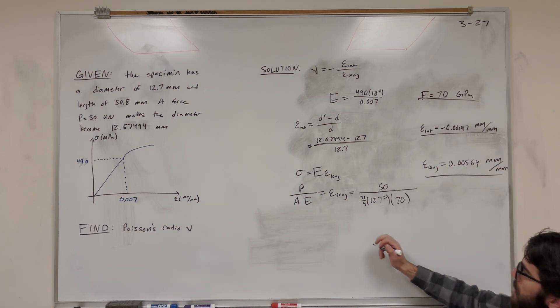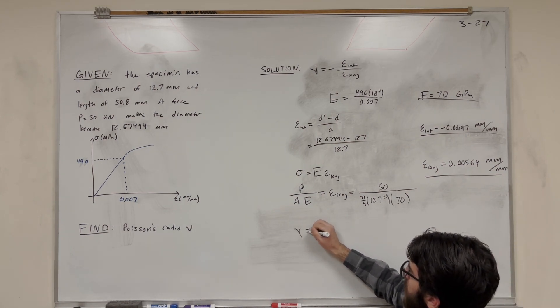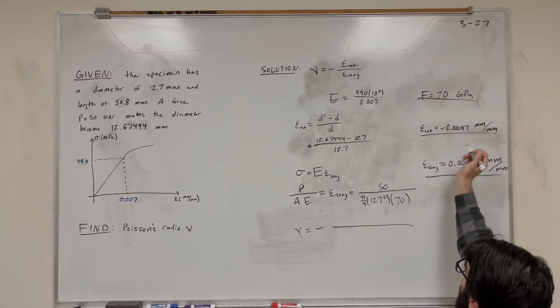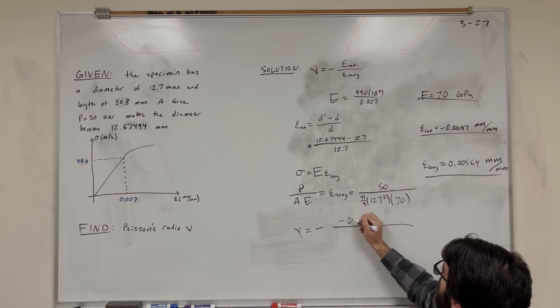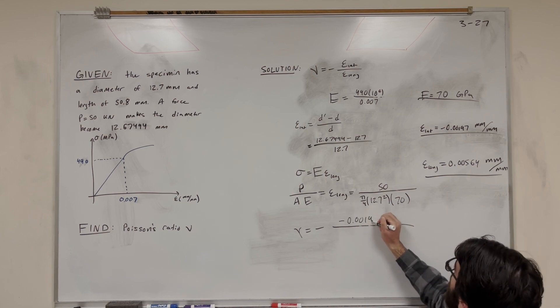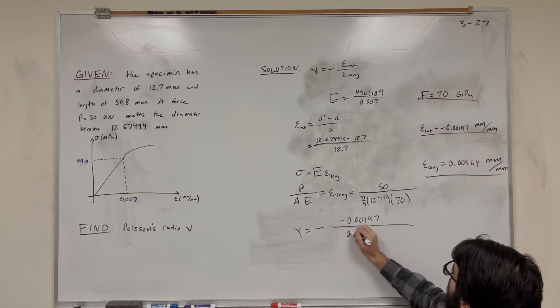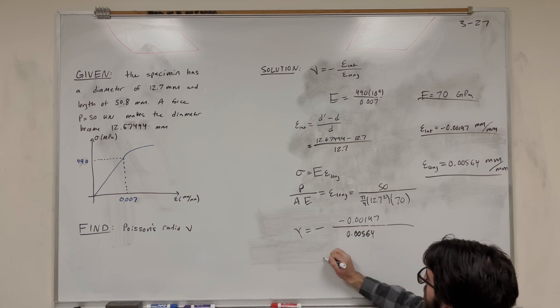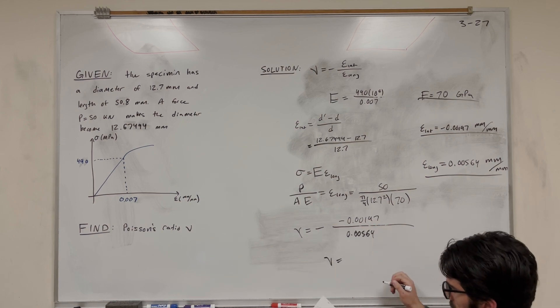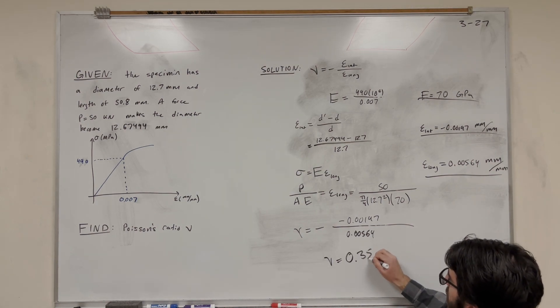So now what we need to do is plug in the Poisson's ratio, negative, flat, so there's another negative there. So those are going to cancel, 0.00197 over 0.00564. You're going to find Poisson's ratio. It's going to be a positive number, 0.350.